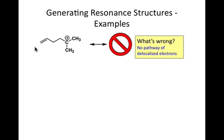And the reason we don't is that we don't have a pathway of delocalized electrons that we can show to move that pi bond over to that carbocation. Any time that you see a cation or an anion and pi bonds, it doesn't mean that you can always push your electrons there. So there are no resonance structures we can draw for this particular compound.